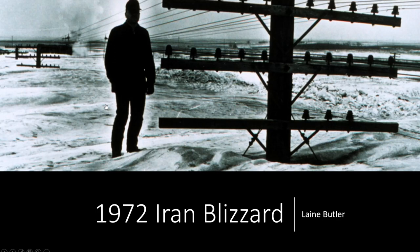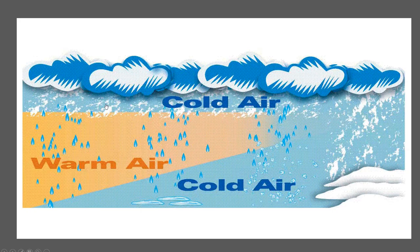The 1972 Iran blizzard is the worst blizzard to be recorded in world history. Up until this point in time, Iran had endured a four-year drought. Iranian citizens were used to climates ranging from arid desert to subtropical, not severe winter storms. When the deadly blizzard hit, the citizens were not expecting it and were not prepared. This left villages demolished and thousands dead.